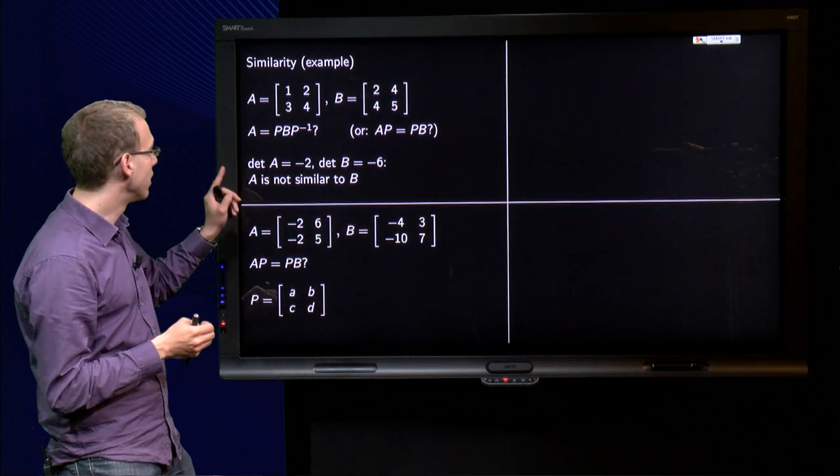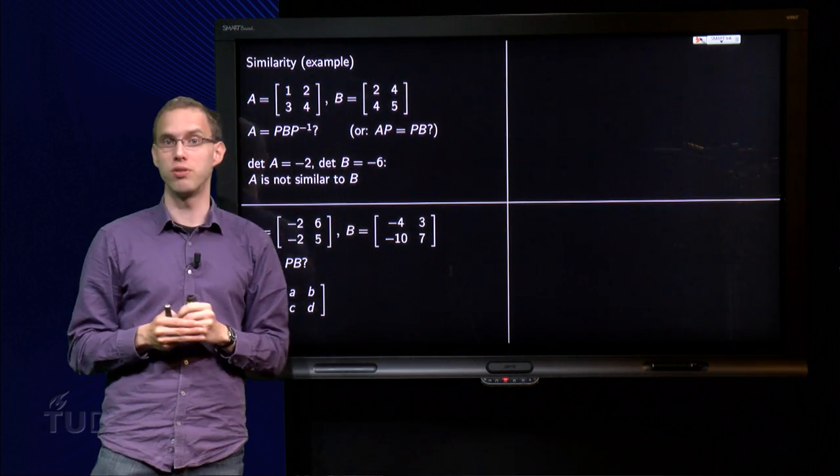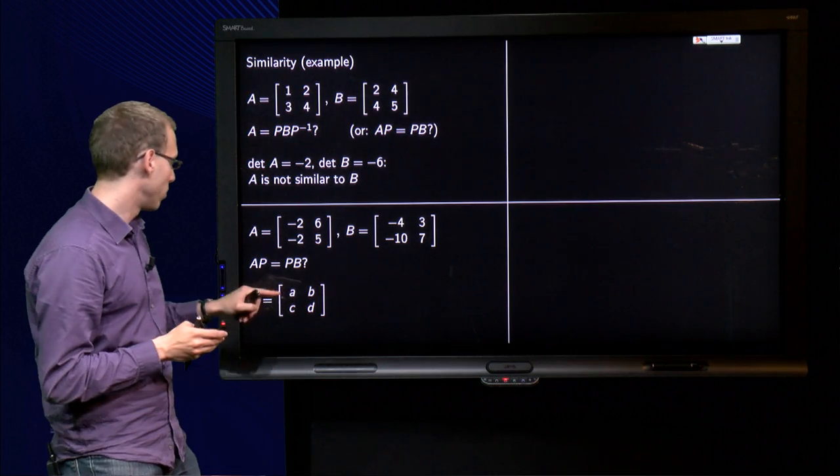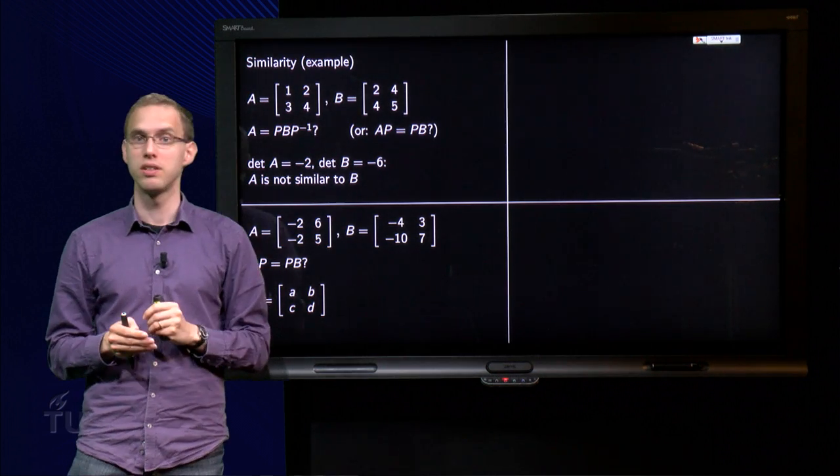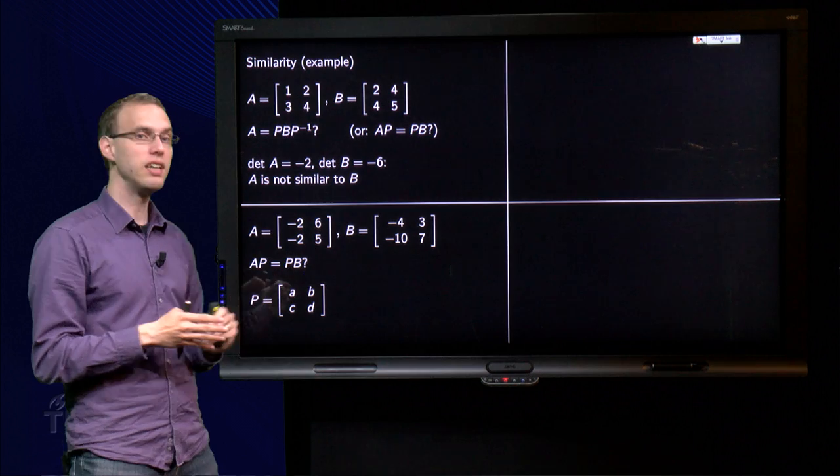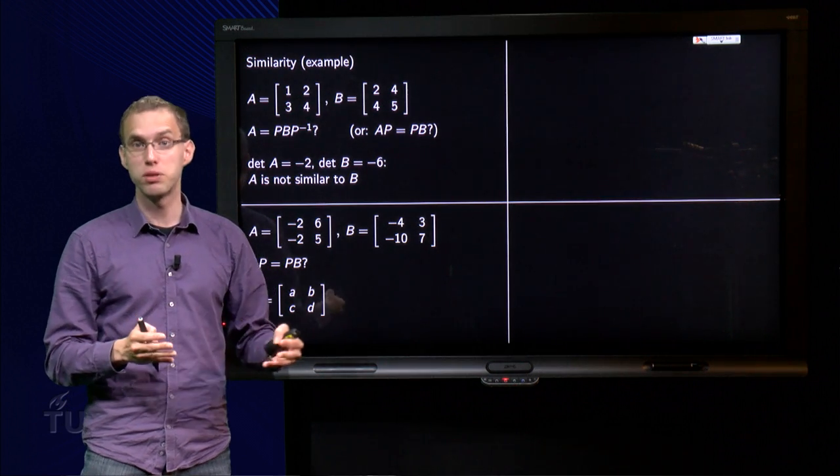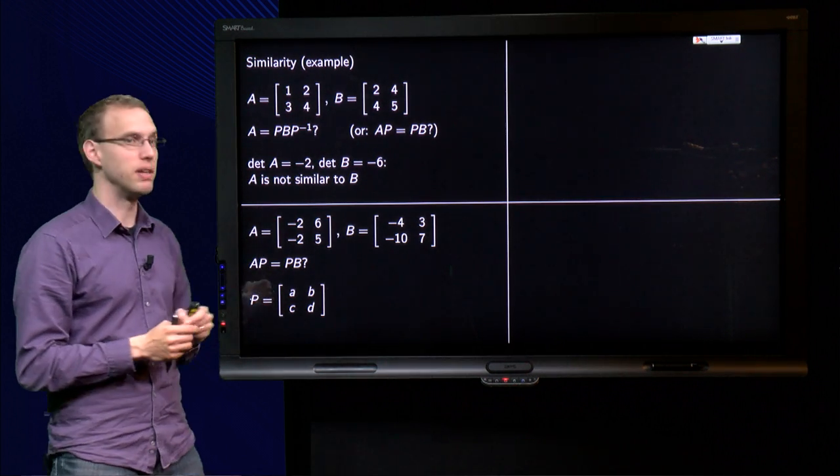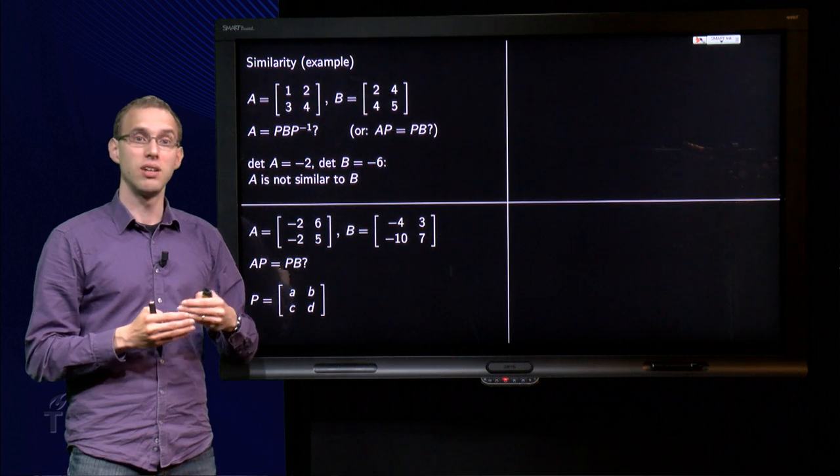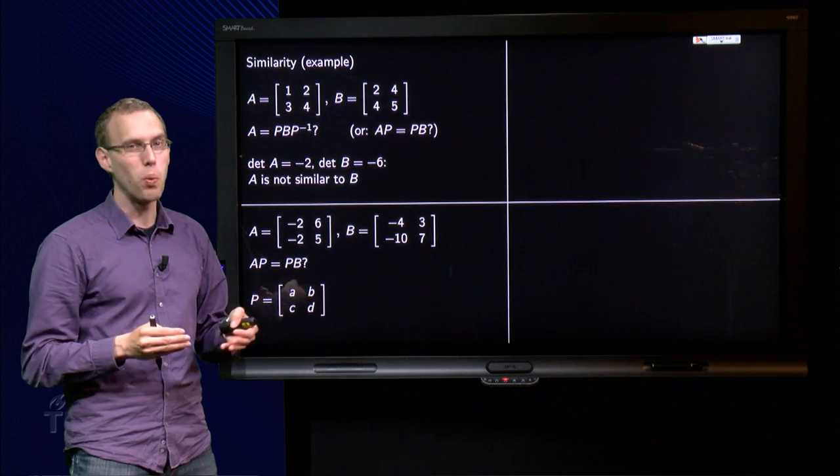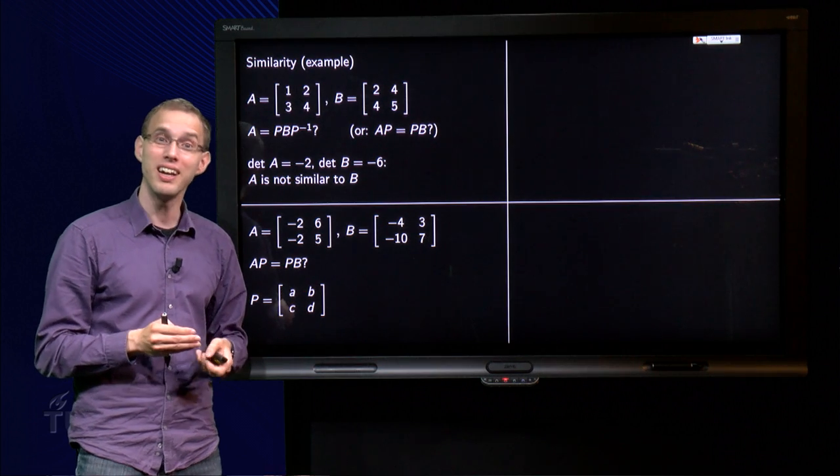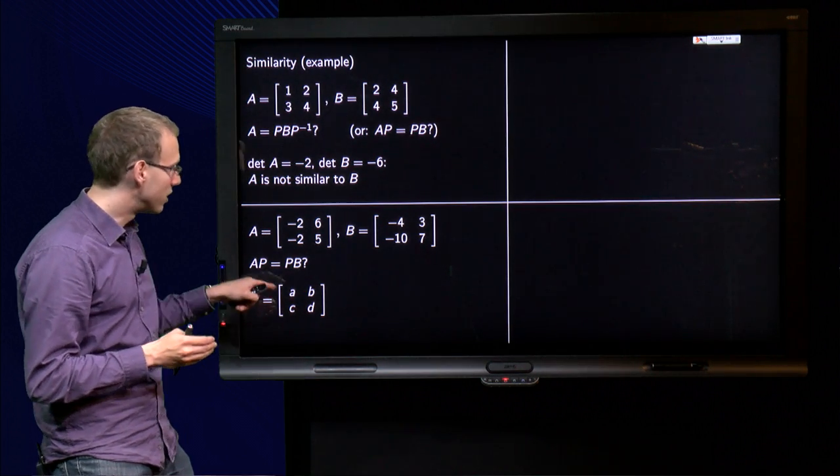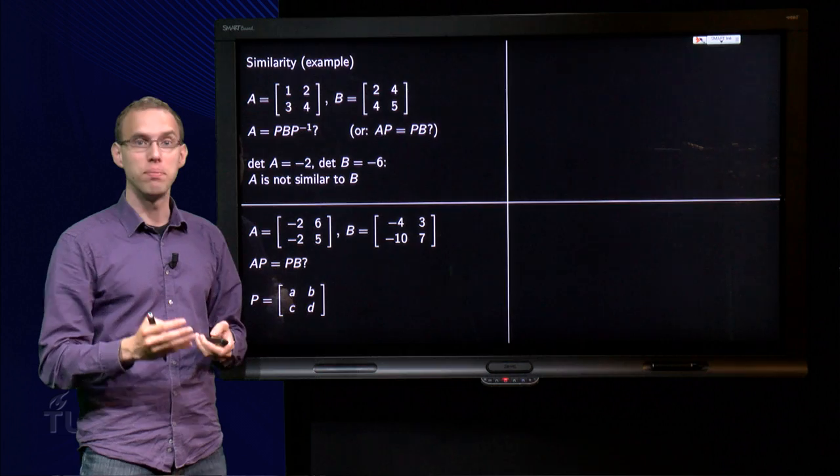Try to find a P such that A times P equals P times B. So you want to find a P, so matrix [A, B; C, D] over here, which is invertible, such that A times P equals P times B. So how are we going to find it? Let's just compute for this general P, A times P and P times B.